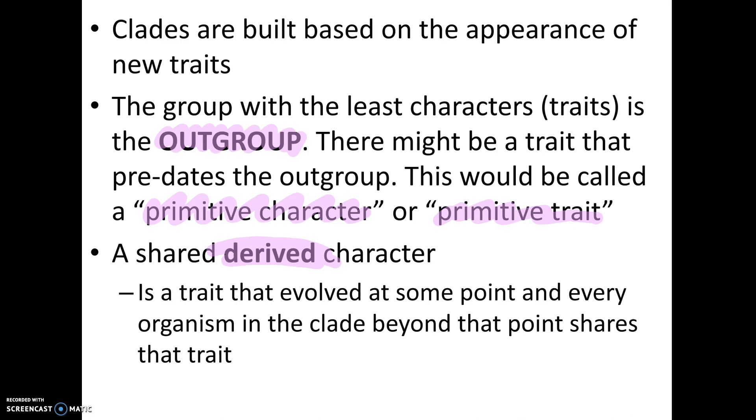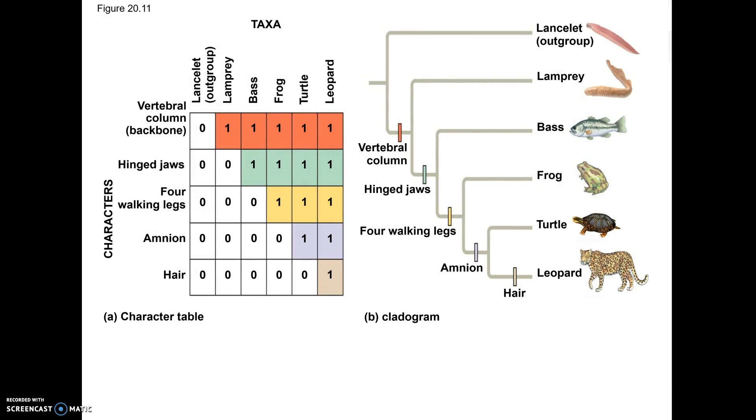So let me show you how these words fit into our definitions. For example, if you look here, this is what we call a matrix. And the matrix is going to have organisms on one side and traits or characteristics on the other. Now this could be flip-flopped. In this case, the organisms are on the top. So notice that the lancelet, our first organism, has no traits.